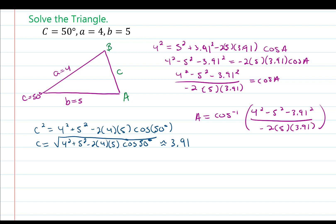Type this into your calculator in degree mode. Start by typing inverse cosine — typically second cosine. Then add an open parenthesis to group the numerator: 4 squared minus 5 squared minus 3.91 squared, close parenthesis, divided by, in parenthesis, negative 2 times 5 times 3.91, close parenthesis, close parenthesis. When you type this in, you'll get an approximate value of 51.6 degrees.